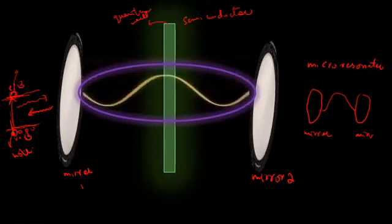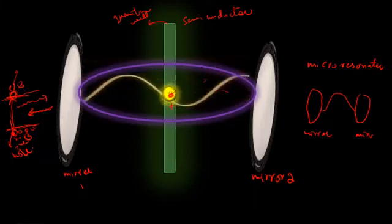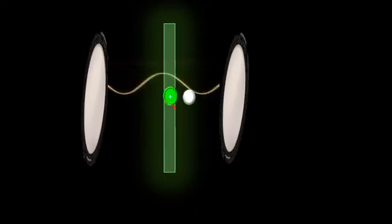If a light wave with the right frequency passes through the quantum well, it can give up its energy to an atom within the quantum well, releasing an electron from the atom. The atom now has a positive charge relative to its surroundings, which is why it is called a hole. So a hole is positively charged and an electron is negatively charged.